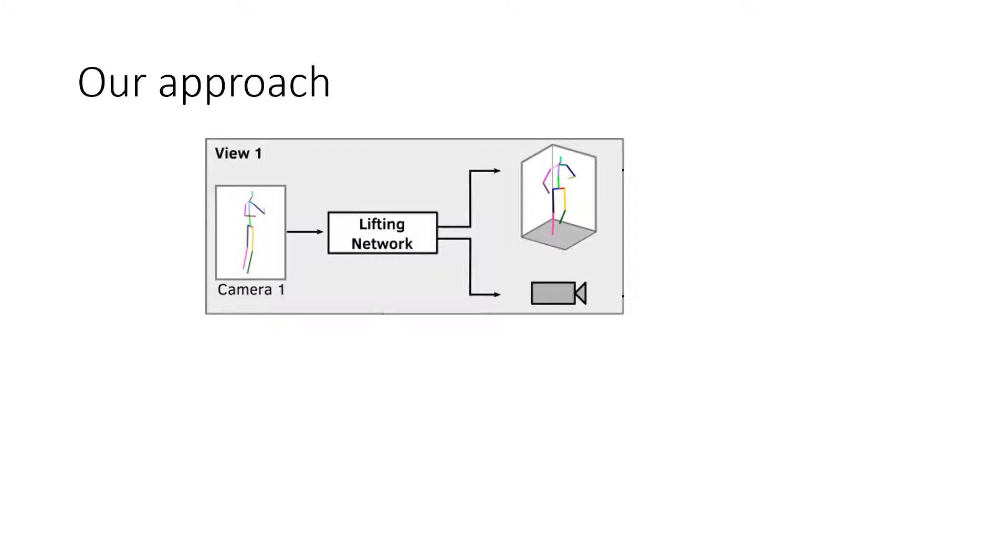Let's start from a single view. We train a lifting network that predicts the 3D human pose. We want this pose to be in a canonical orientation. In parallel, we predict a camera that projects the predicted 3D pose back to 2D. If our 3D pose and the camera are correctly estimated, the back projection matches the 2D input pose. We use a back projection error as a loss.